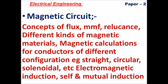Next is Magnetic Circuit — also one of the main topics. Concepts of Flux, MMF, Reluctance, Different Kinds of Magnetic Material, Magnetic Calculations for Conductors of Different Configurations — e.g., straight, circular, solenoid, toroid, etc. Electromagnetic Induction, Self and Mutual Induction. These are the topics covered in Paper 2, Electrical Engineering.